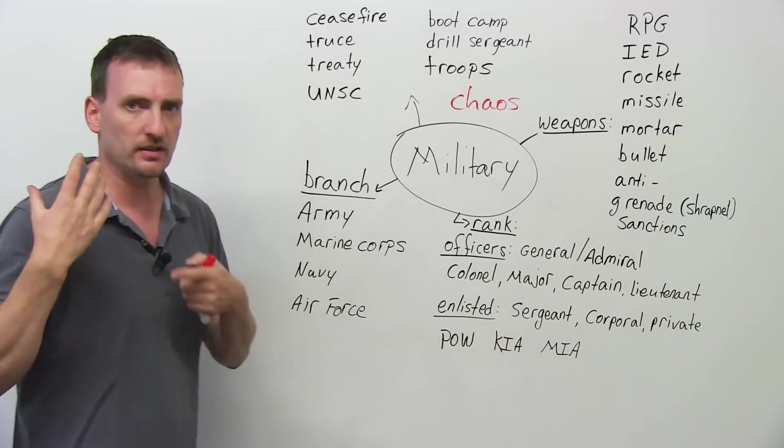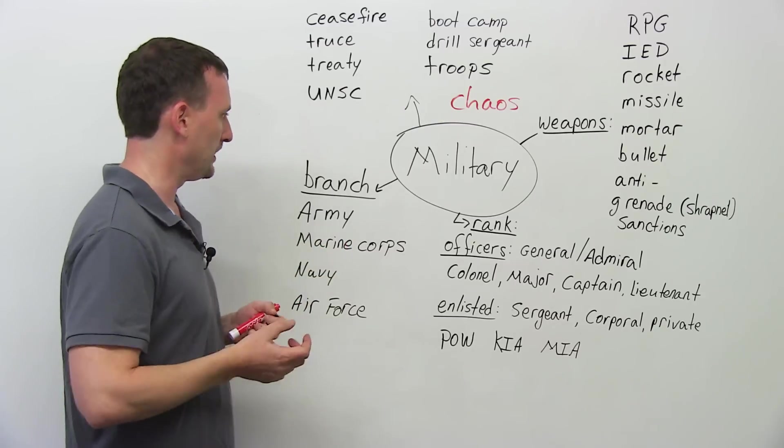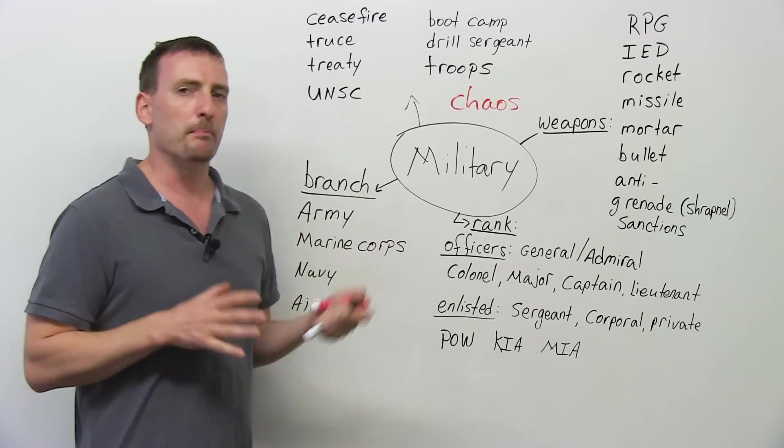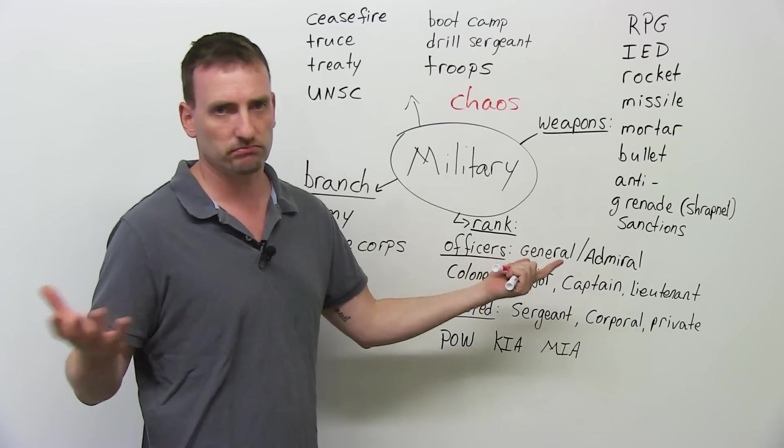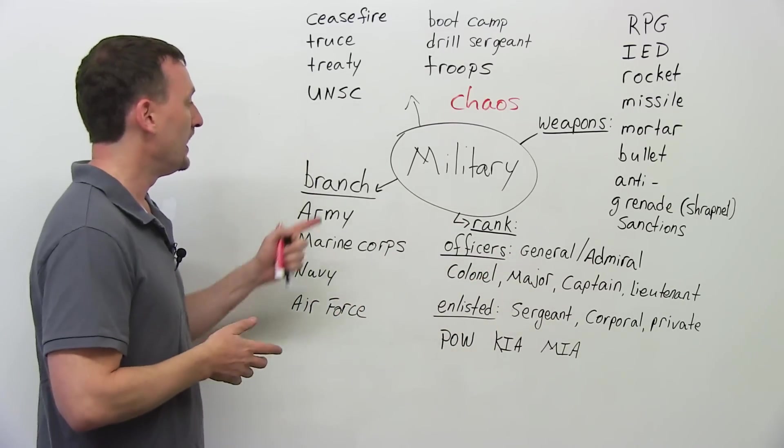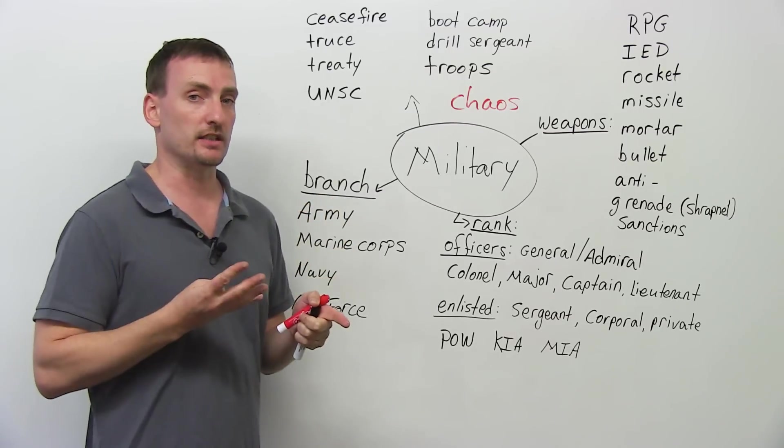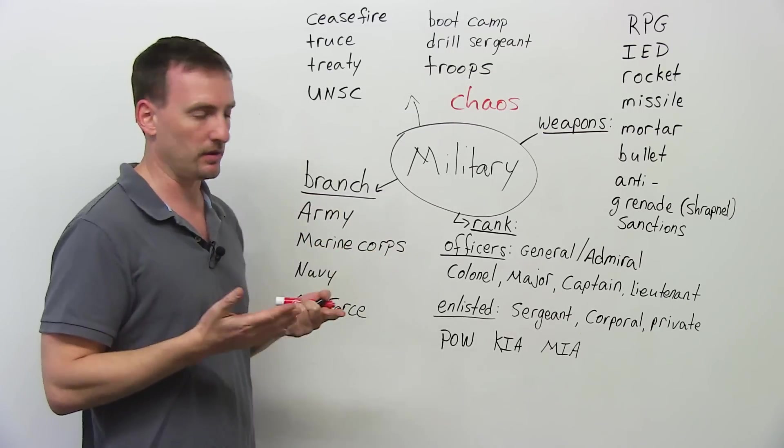So it's better that you understand what it is you're looking at, what it is you're hearing, what it is you're reading, what it is you're talking about. We're going to look at a few things just to get you a basic understanding of the military. I'm going to take the American military as an example, because they're the biggest and, of course, they're the most active military right now. The military has four branches, four parts to the military.